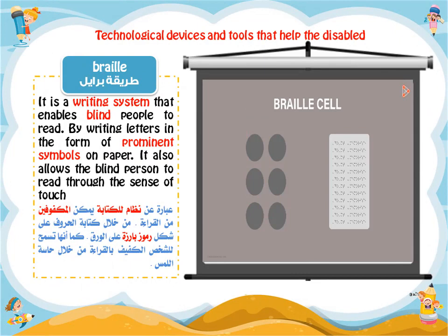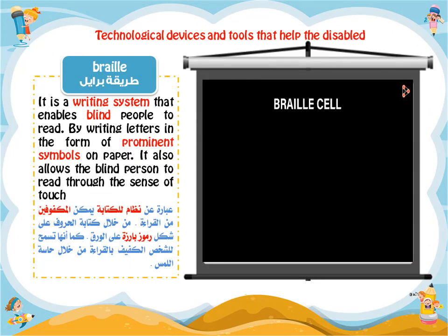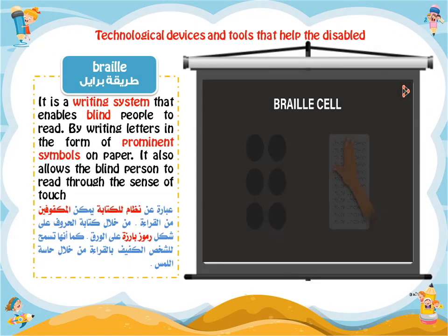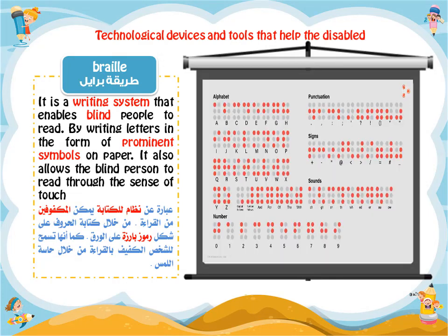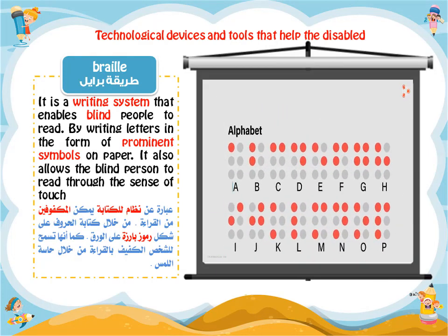Braille system: it is a writing system that enables blind people to read by writing letters in the form of prominent symbols on paper. It also allows the blind person to read through the sense of touch.